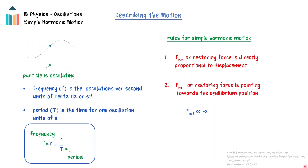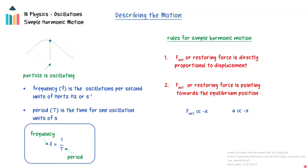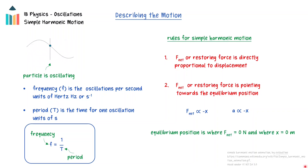Because of Newton's second law, which relates the net force to the acceleration of the mass, these requirements can also be stated in terms of the acceleration. The equilibrium position occurs when the net force is equal to zero.